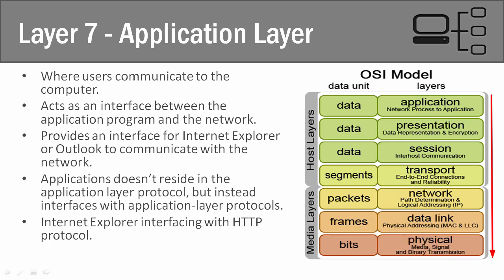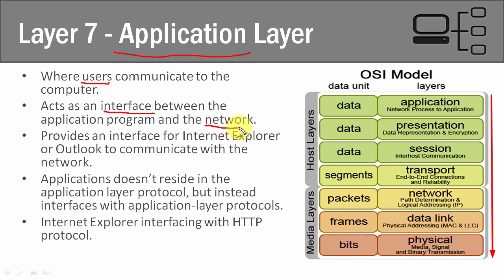So why are we starting at the top? We're starting at the top because this is where you as a user use computer programs and applications to communicate with the network. That's why we call it the application layer — because this is where you are interacting with applications, and then these application programs are going to interface with the network. We have application programs such as Internet Explorer or Outlook, and these programs are going to interact with application layer protocols.